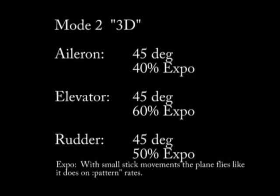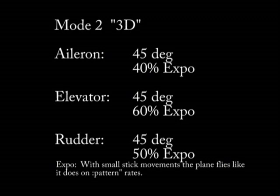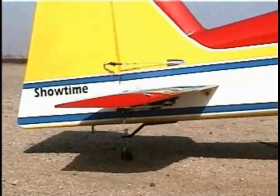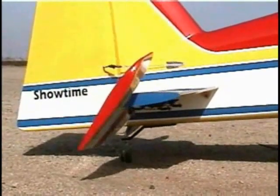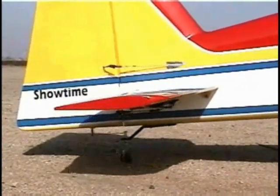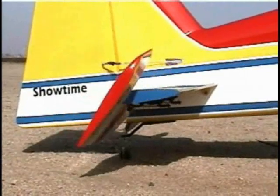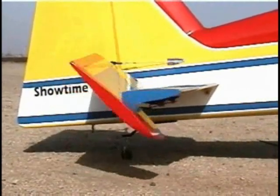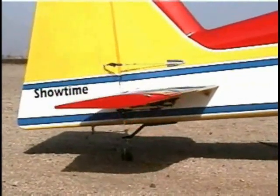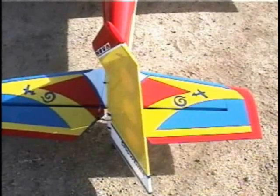Now for our 3D rates, you can see we've gone to maximum deflection — 45 degrees on all surfaces. The expo is increased in an effort to get a similar feel to the plane as our pattern rate with small stick deflections. This is the mode that will be selected for 3D maneuvers, including Harriers, rolling Harriers, walls, waterfalls, hovering, and anything requiring massive surface deflection.